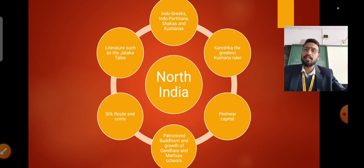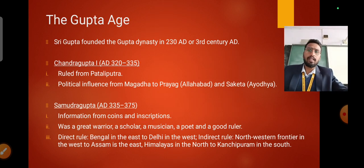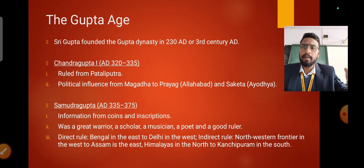The dynasty reached the height of its glory in the 4th century under the leadership of Chandragupta I and many others. Shri Gupta founded the Gupta dynasty in 230 AD or 3rd century AD and the Gupta era is believed to have started from 322 and above.